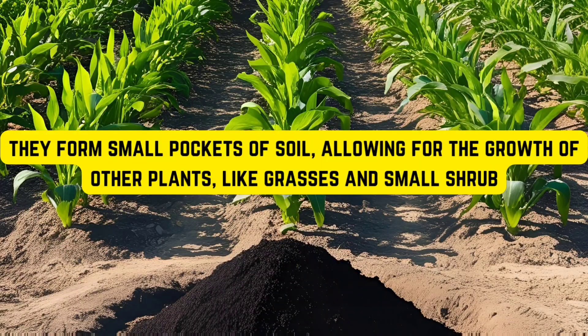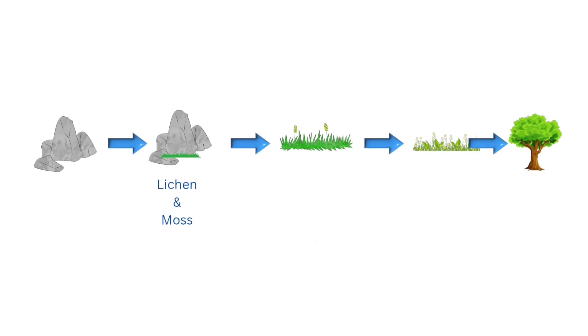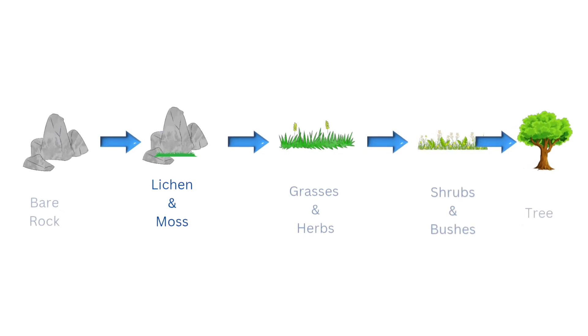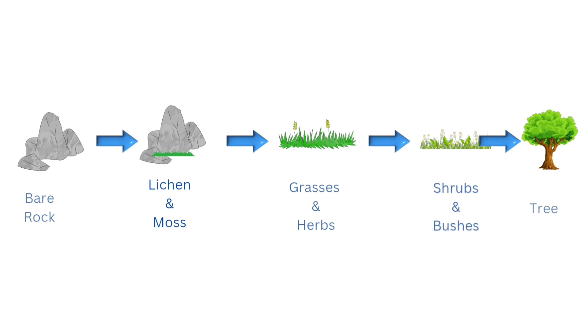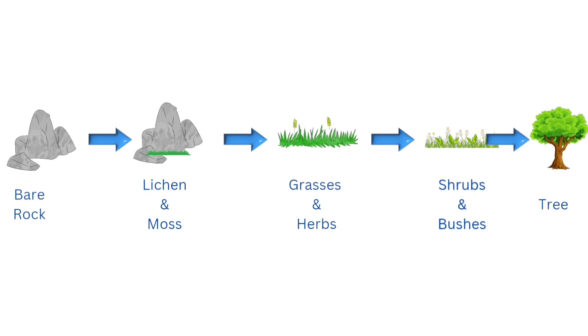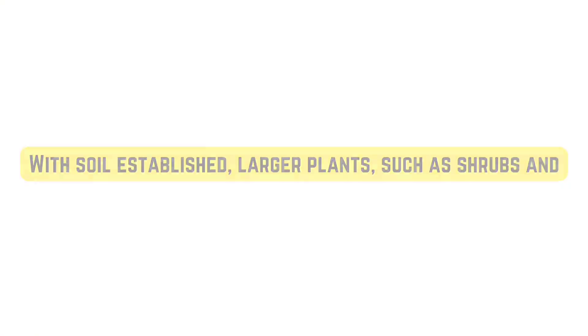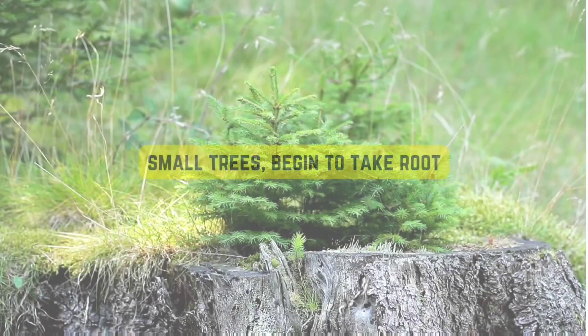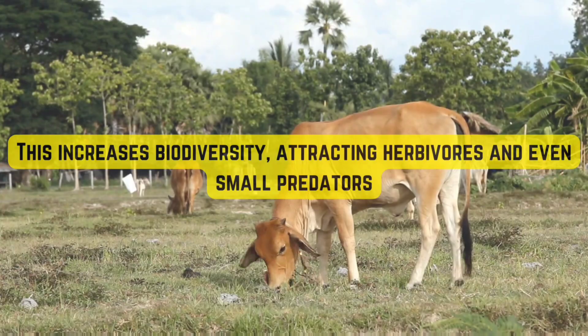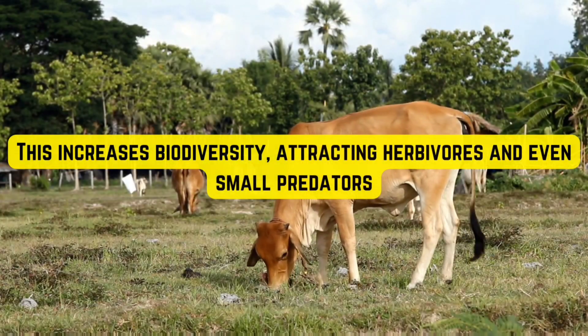As the pioneer species break down rocks, they form small pockets of soil, allowing for the growth of other plants like grasses and small shrubs. This marks the transition from the pioneer stage to the next phase of succession. With soil established, larger plants such as shrubs and small trees begin to take root.